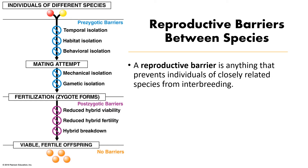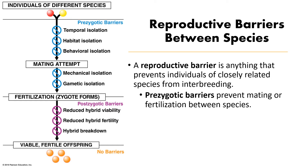When we talk about speciation, sexual reproduction and breeding are really important. There must be some mechanism — a reproductive barrier — that prevents two groups of organisms from interbreeding. These barriers take two major forms. The first is a prezygotic barrier: think 'pre-baby,' meaning something happens before mating takes place, before a zygote forms. The second is postzygotic barriers, which occur after egg and sperm fertilization — you have a zygote, but something prevents fertile, viable offspring.